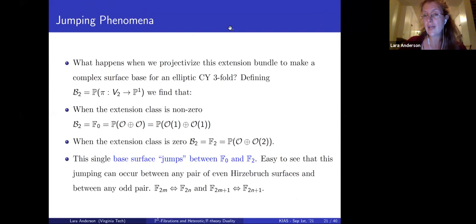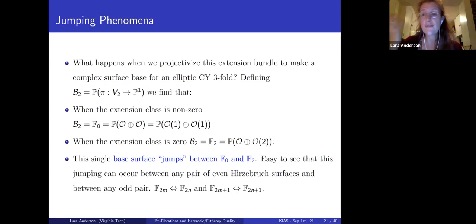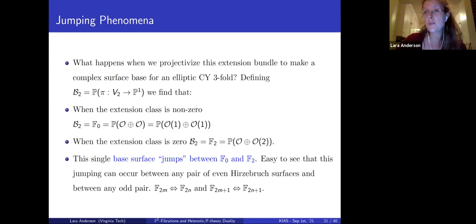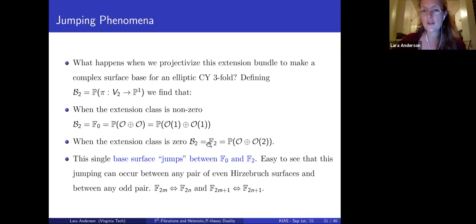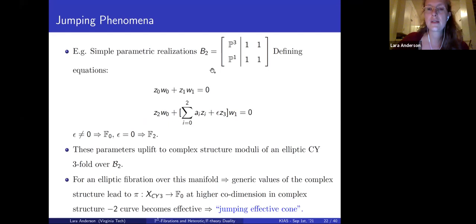This jumping can occur between any even pair of Hirzebruch surfaces F_{2m} and F_{2n}, and between any odd pair. What is novel here is that much work has been done characterizing F-theory vacua in four and six dimensions by fixing, for example, a toric base surface and characterizing the full effective physics. The novel observation is that one Calabi-Yau can actually jump between two topologically distinct surfaces in its description. Two distinct complex surfaces — topologically distinct objects — and one Calabi-Yau can jump between the two.